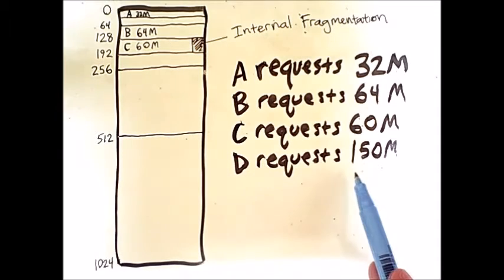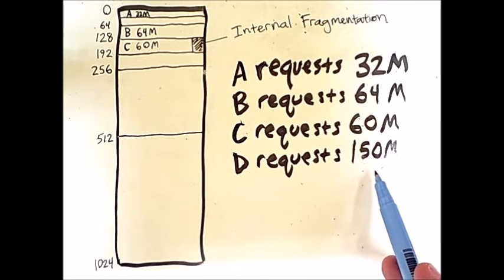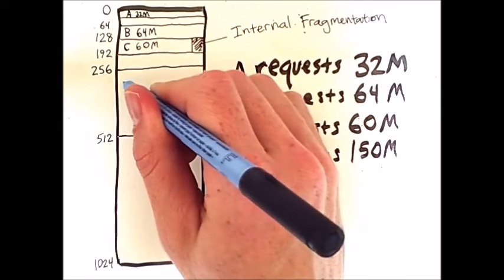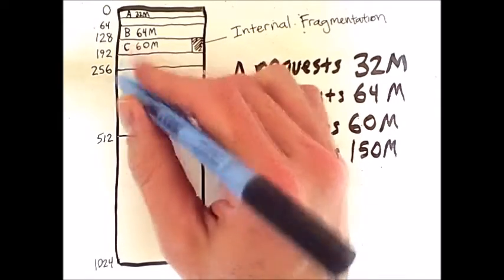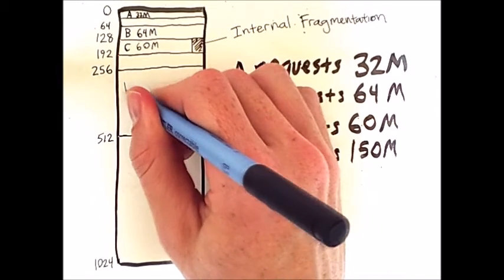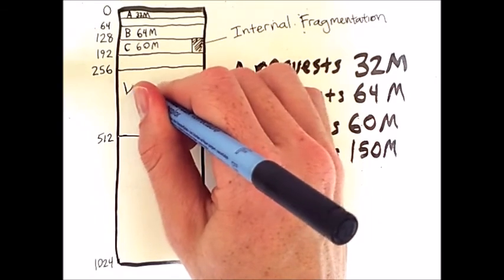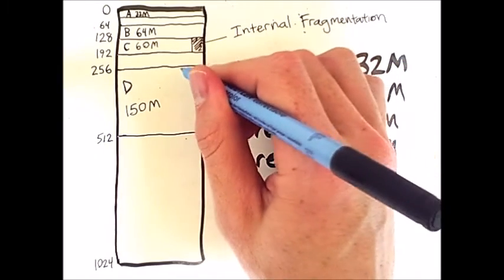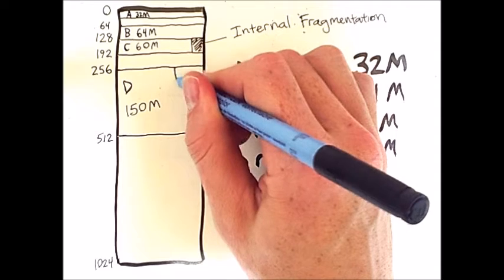That is less than 150. So this request for 150 megabytes actually needs to take up this entire 256 megabyte region of memory, which once again leads to a lot of internal fragmentation.